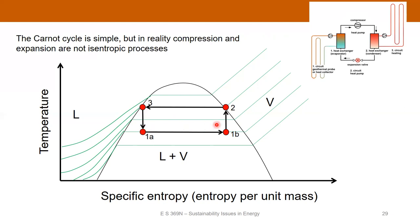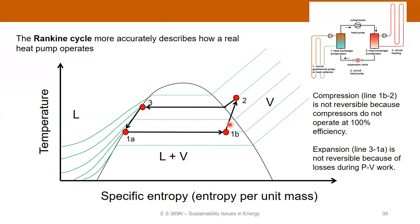In reality, the compression and expansion are not isentropic processes, so those lines are not truly vertical in a real system. The Rankine cycle more accurately describes how a real heat pump operates. Compression is not isentropic because the compressor doesn't operate at 100% efficiency — there are always losses. Similarly, the expansion line is not isentropic because you always have losses when doing PV work. But the basic principle is essentially the same as the Carnot cycle.